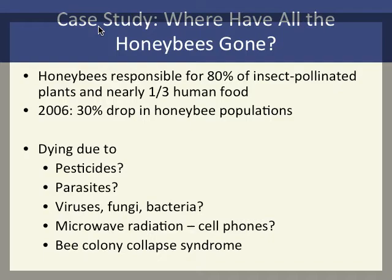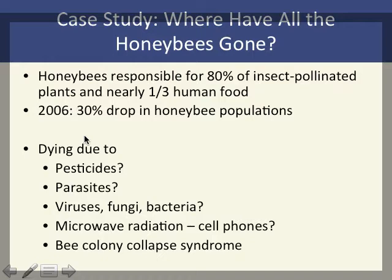Honeybees are critically important — they are responsible for 80% of insect pollination worldwide. Approximately one out of every three bites of food we eat is pollinated by honeybees. If honeybee populations collapsed, that entire portion of our food supply would be at risk. Some biologists dedicate their entire research careers to studying honeybee decline and ways to reintroduce and sustain wild honeybee populations.